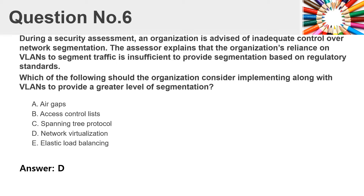Question 6: During a security assessment, an organization is advised of inadequate control over network segmentation. The assessor explains that the organization's reliance on VLANs to segment traffic is insufficient to provide segmentation based on regulatory standards. Which of the following should the organization consider implementing along with VLANs to provide a greater level of segmentation?